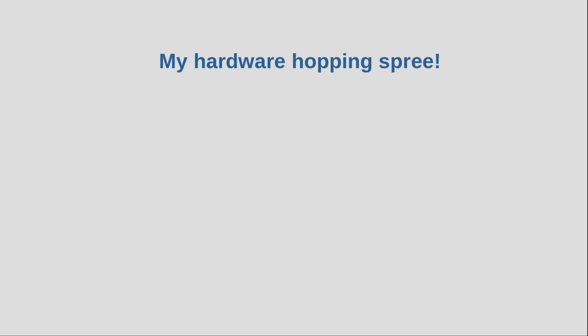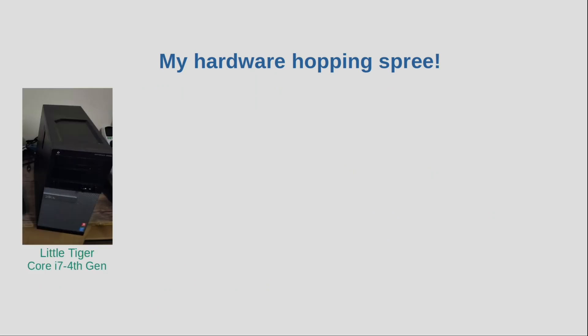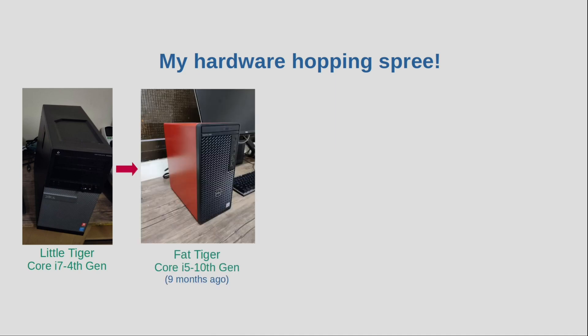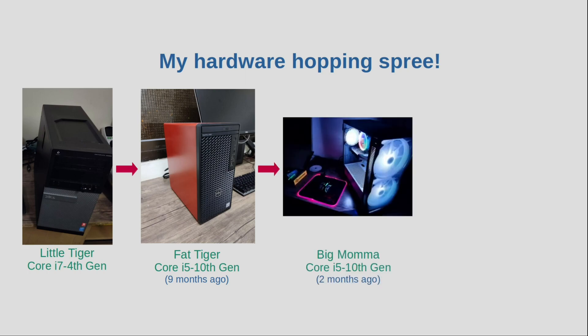First I'd like to brag about my hardware hopping. I initially started with my little tiger — it was a budget machine with 16 GB of DDR3 RAM, a GTX 1650 with 4 GB RAM, two SSDs (one for Windows, one for Linux), and one mechanical hard drive as common storage between the two platforms. From this PC I moved on to fat tiger — my Linux drive remained the same, I only upgraded the Windows SSD from SATA to M.2 NVMe.